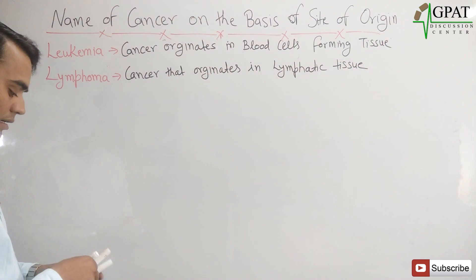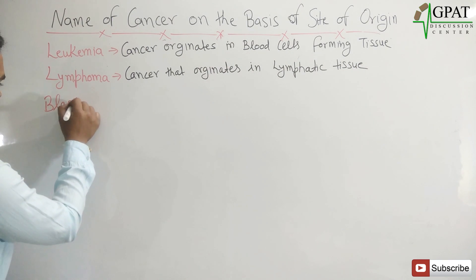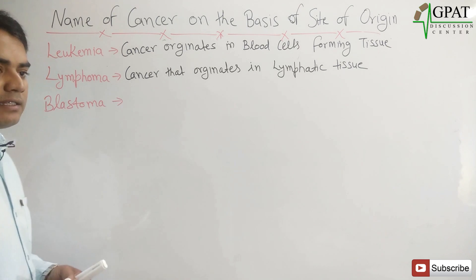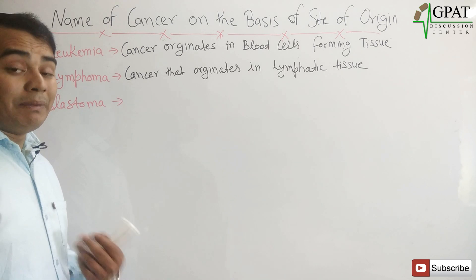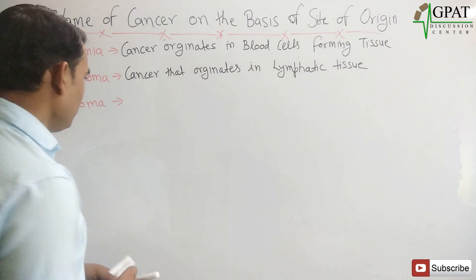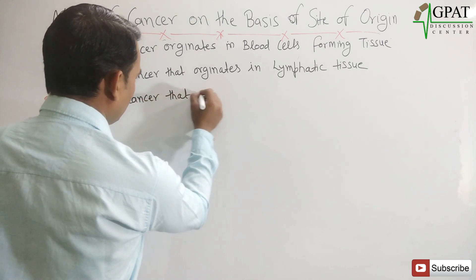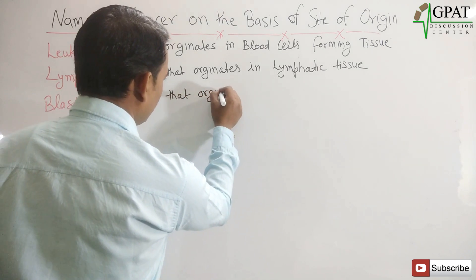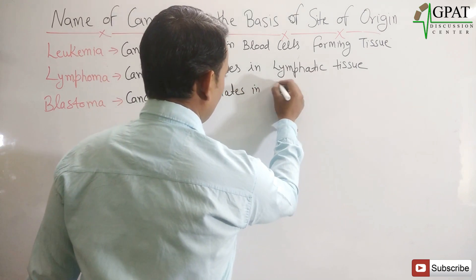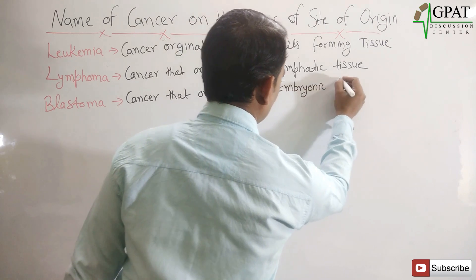Next, blastoma. Here the 'blast' refers to blast cells, which mainly form in the embryonic tissue. So blastoma is the cancer that originates in embryonic tissue.